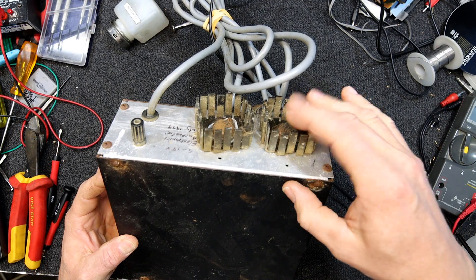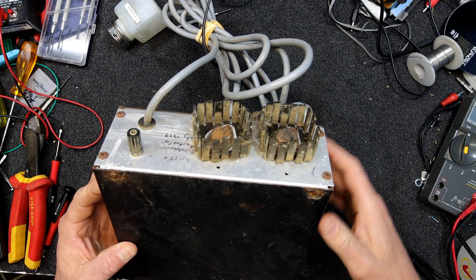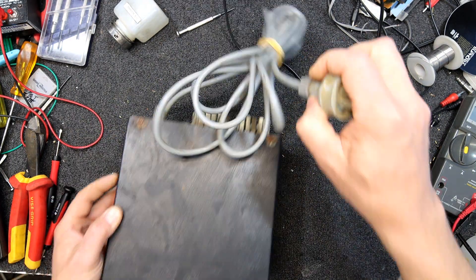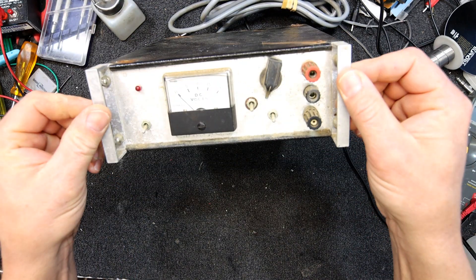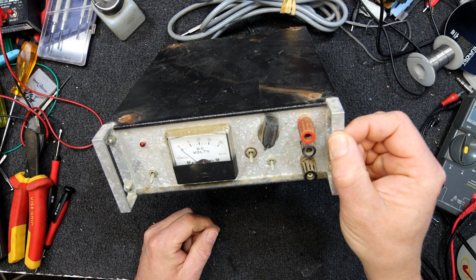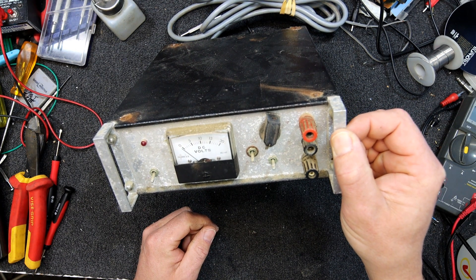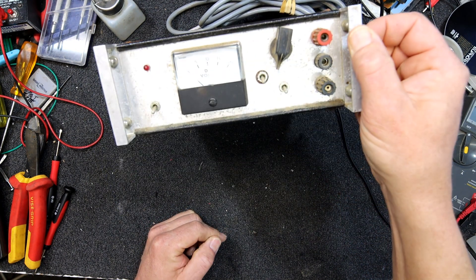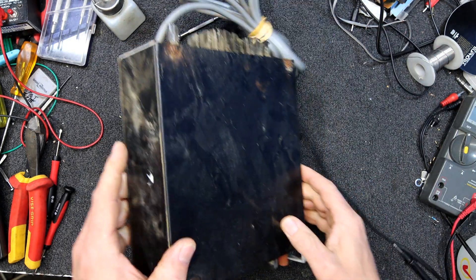But if nothing else, I do need a couple of these heatsinks or at least one for a project and that cost nearly as much as what I paid for this. So I might as well recycle that. And if that volt meter is any good, it's probably just a one milliamp meter. That'll be handy.